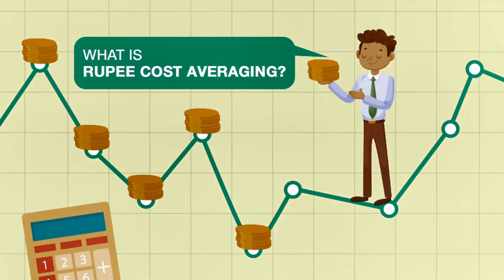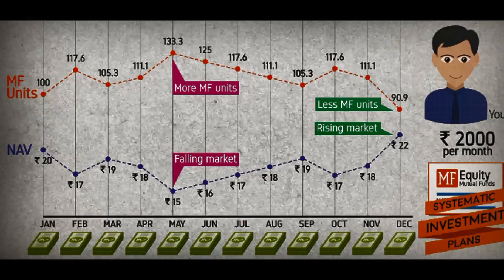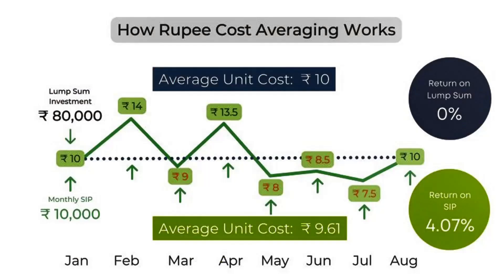Now, let us understand what Rupee Cost Averaging, or RCA, is, why it's important, and how it could potentially benefit investors in the long run. RCA is the concept of averaging out the price at which you buy equity-based investments. This refers to investing fixed sums of money regularly in a particular investment at different points of time and hence at different prices. What automatically ends up happening is that you buy more units at a lesser price and less units when the price goes higher. This results in the average cost of your investment per unit being lower than the price per unit over time.